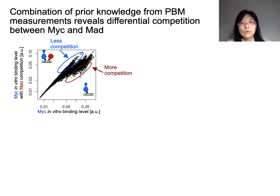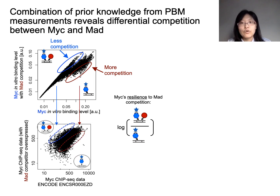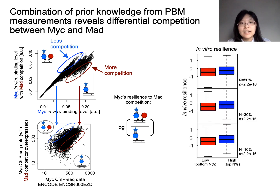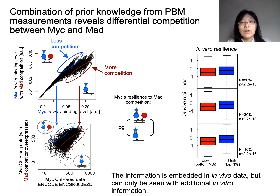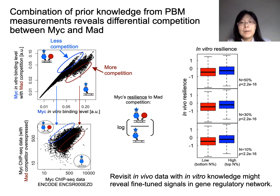We describe this competition outcome using what we call resilience. Based on resilience, we stratified the genomic binding sites of MIG and MAT based on in vitro knowledge. Then, we go back to ChIP-seq data and computed the in vivo resilience for the two groups of sites. We found that genomic sites with higher in vitro resilience also have higher resilience in vivo. In other words, sites differentially bound in vitro also show different binding signals in the cell according to ChIP-seq. This demonstrates that the DNA binding patterns resulting from MIG-MAT competition in the cell are consistent with our in vitro observations. So the competition between MIG and MAT is captured by ChIP-seq data. However, it is not directly visible and can only be seen with additional knowledge from in vitro assays. This suggests that applying in vitro quantification to the interpretation of in vivo ChIP-seq data may push the limits of ChIP-seq sensitivity and reveal subtle signals in gene regulatory networks.